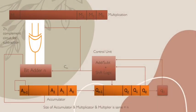The hardware circuit to perform Booth's algorithm consists of many parts. The registers present are: accumulator, multiplier, Q0, and multiplicand — these are the four registers. Along with them, a 2's complement circuit and an n-bit adder circuit are also present. The control unit controls the flow of data.